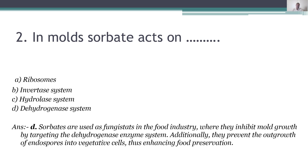In mold, sorbates acts on the dehydrogenase system. Sorbates are used as fungistats in the food industry and they inhibit mold growth by targeting the dehydrogenase enzyme system. Additionally, they prevent the outgrowth of endospores into vegetative cells, thus enhancing food preservation.